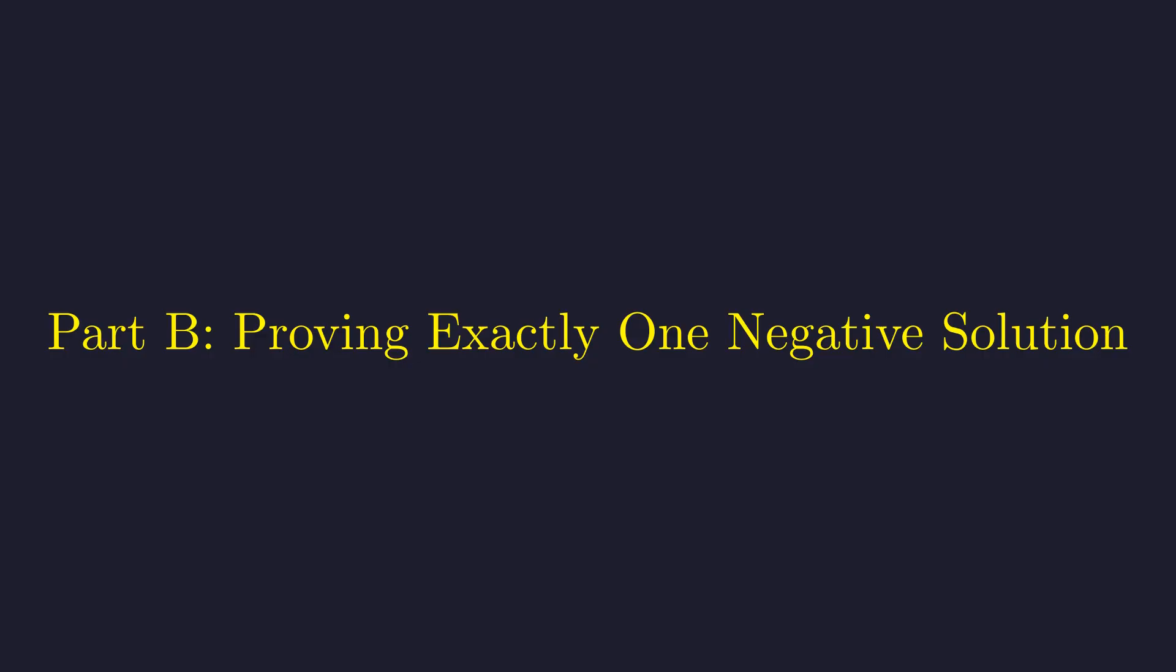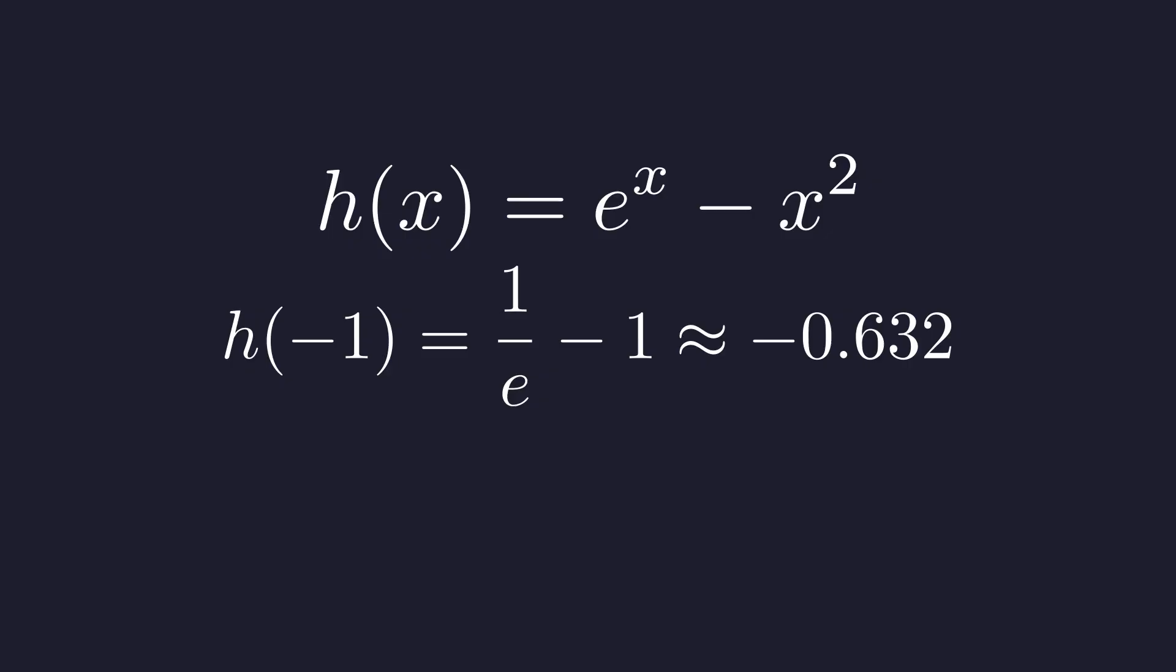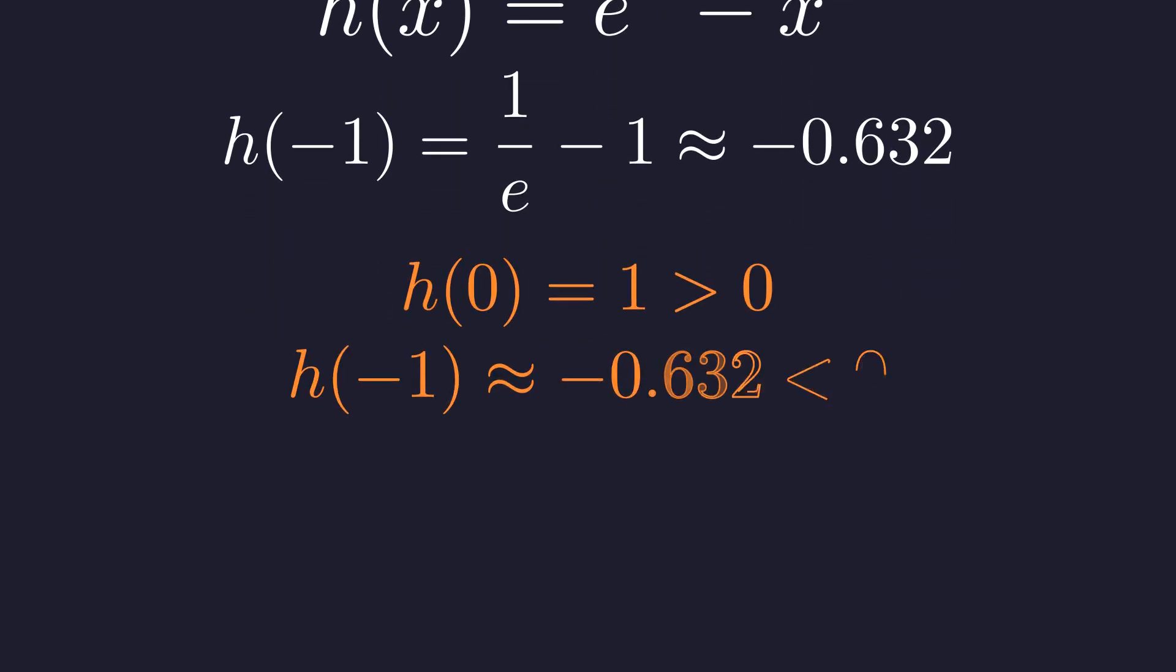Part B. Now we need to show that exactly one solution exists when x is negative. Let's evaluate our helper function at x equals negative 1. h of negative 1 equals e to the negative 1 minus negative 1 squared. This equals 1 over e minus 1, which is about negative 0.632. So we have h of 0 equals 1, which is positive, and h of negative 1 is negative. The function changes sign.